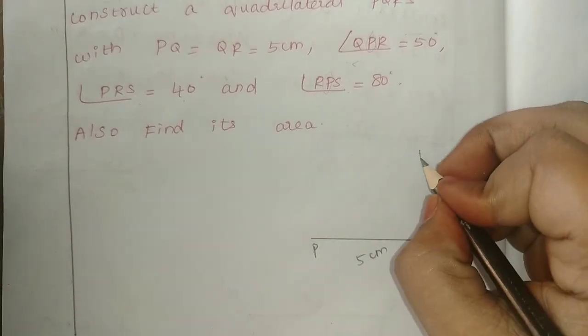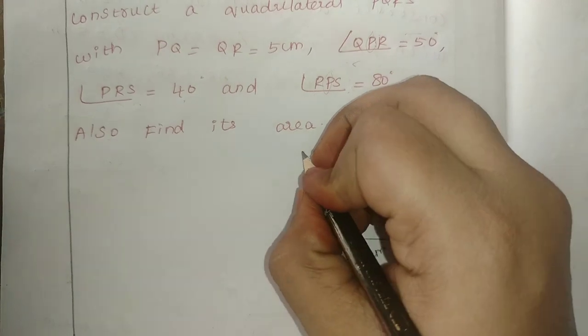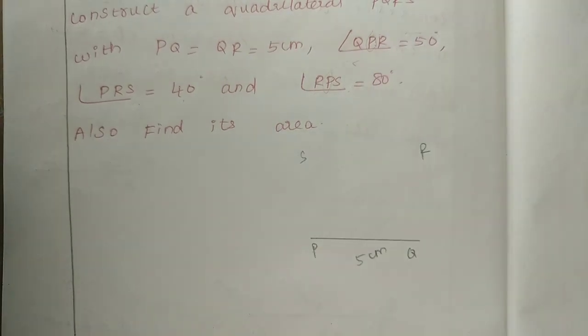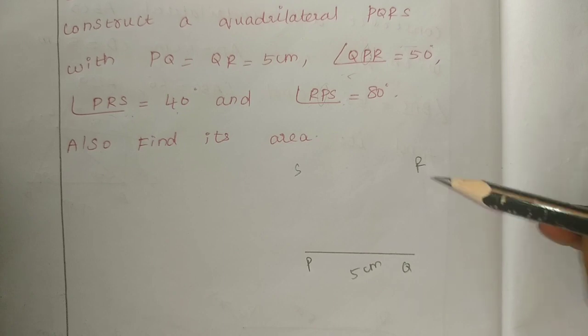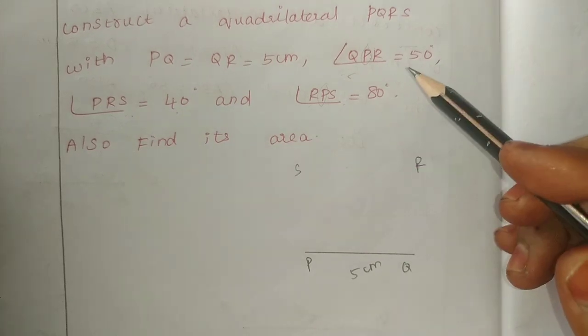We label the vertices P, Q, R, S for the quadrilateral. Next, we need to look at the degree values given in the problem.